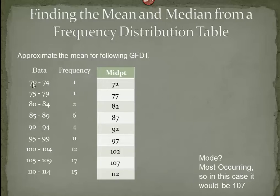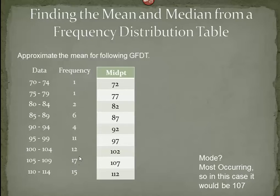Finding the midpoint of a class requires that you add the lower class limit and the upper class limit and divide by 2. Since we don't know what number is actually in a category, we approximate it with the midpoint. For mode, we pick the most occurring set — that's going to be frequency 17, which is the highest frequency. That means most numbers fell into this class. The midpoint of that class is 107, and that's why we selected it as the mode.